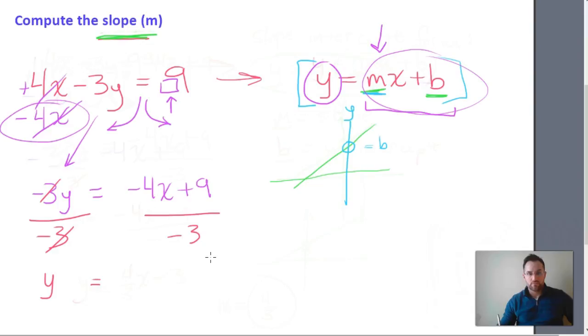So now we end up with y equals negative 4x, positive 9, all of that divided against negative 3. So positive 9 divided by negative 3, that's going to give us a negative 3. So we bring that down to negative 3.